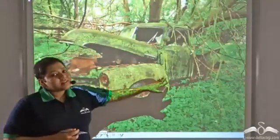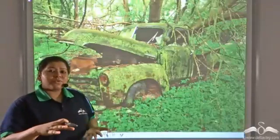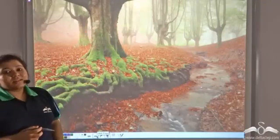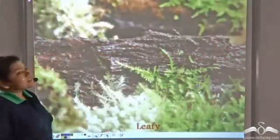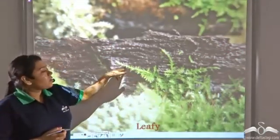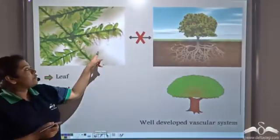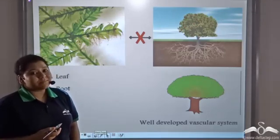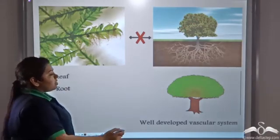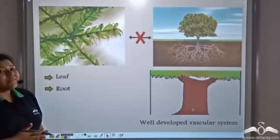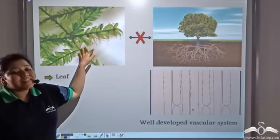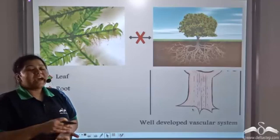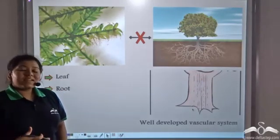Have you seen old cars on which green substances have grown, or huge trees on which green structures have grown on the trunk? Even these are plants. If you see closely, you will find leaf-like structures on these plants. Not only leaves, they also have roots that form from the underside of the stems. Unlike big trees, they do not have a well-developed vascular system — that is, well-developed xylem and phloem. So these roots are directly inserted into the bark of the bigger plants on which they grow and directly absorb nutrition from it.